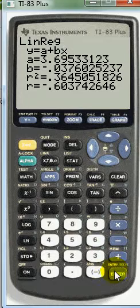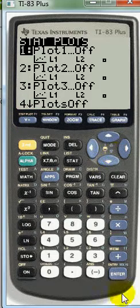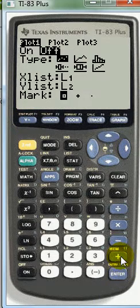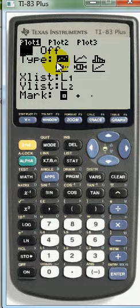To graph it, we go to stat plot, which is second Y. Turn stat plot on - this is already in scatter plot mode, so we're good.